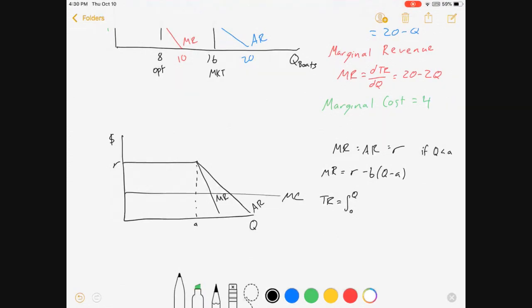Total revenue is equal to the area under the marginal revenue curve, which is equal to the integral from 0 to Q of R minus B times (Q minus A), all of that dQ.